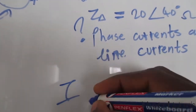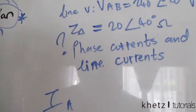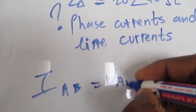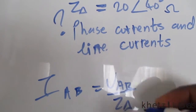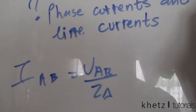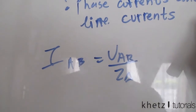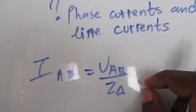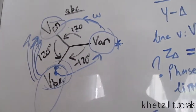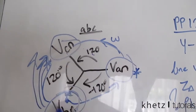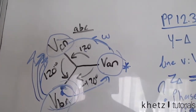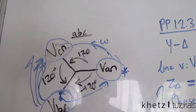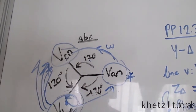For the phase current, IAB equals VAB divided by Z-delta. What I like about three-phase analysis is you basically just have to find one value to find the others. We're told it's an ABC sequence, as shown in the textbook, and it applies for everything — whether line currents, phase voltages, line voltages, or whatever.